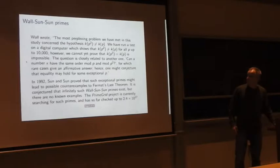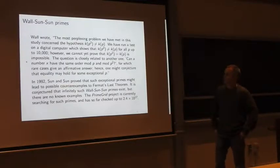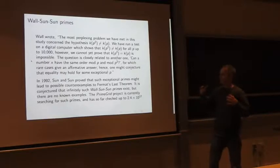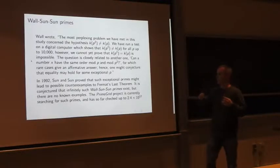But I guess he kind of said it best, so I'll quote him directly. He said that the most perplexing problem that we've met in this study concerned the hypothesis that the period of mod P squared doesn't equal to mod P. And so he ran a test on a digital computer which showed that it was never equal for all P up to 10,000, but he could not yet prove that it was impossible. And that it's closely related to another question: can a number have X have the same order mod P and mod P squared, which in rare cases has an affirmative answer. And so you might conjecture that equality might hold for some exceptional P.